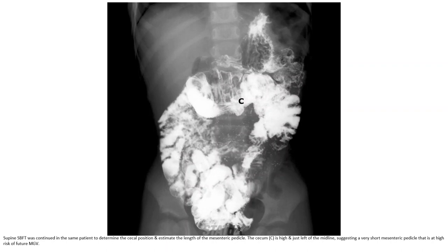Small bowel follow-through was continued in the same patient to determine the cecal position and estimate the length of the mesenteric base. The cecum is high and just left of the midline, suggesting a very short mesenteric base — a high risk for future midgut volvulus.